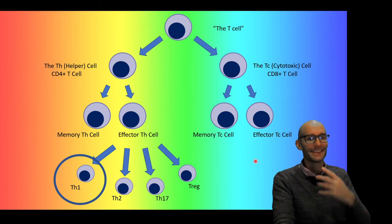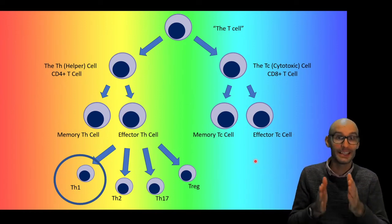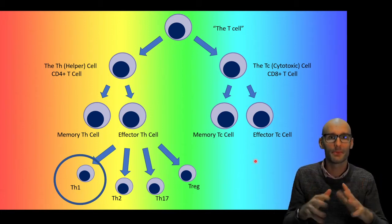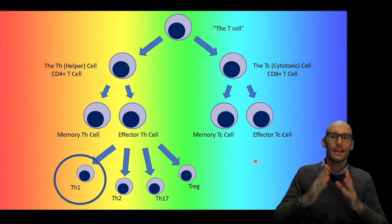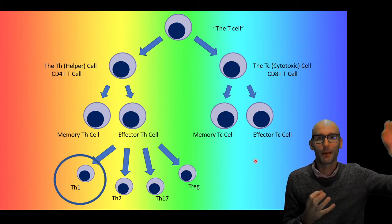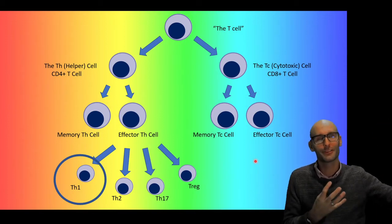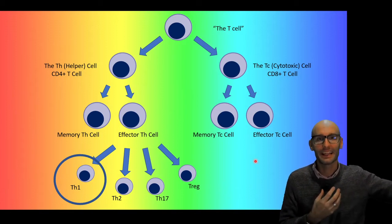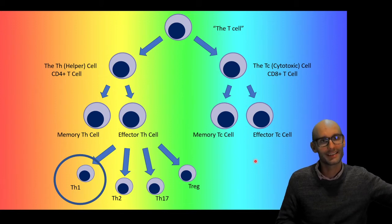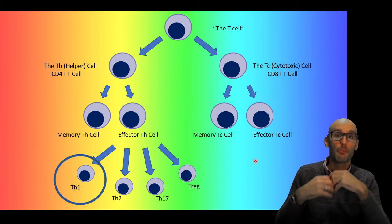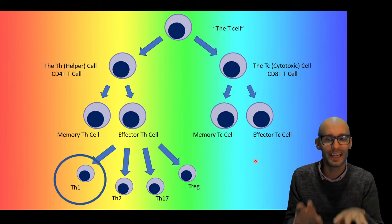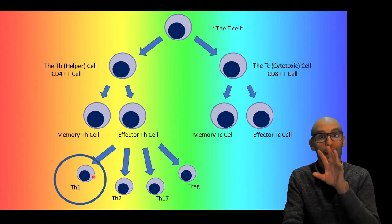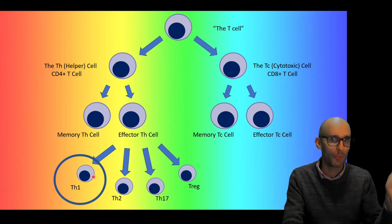Today, we're going to be looking at the Th1 cell, which is an effective T helper cell. So it's a T helper cell that's had its TCR receptor activated. And so now it is proliferated. Some of them go and become sort of dormant proliferative cells. And they become memory cells. And then others proliferate and actually go out and start to do what T helper cells do. And they can be broken down into subcategories.